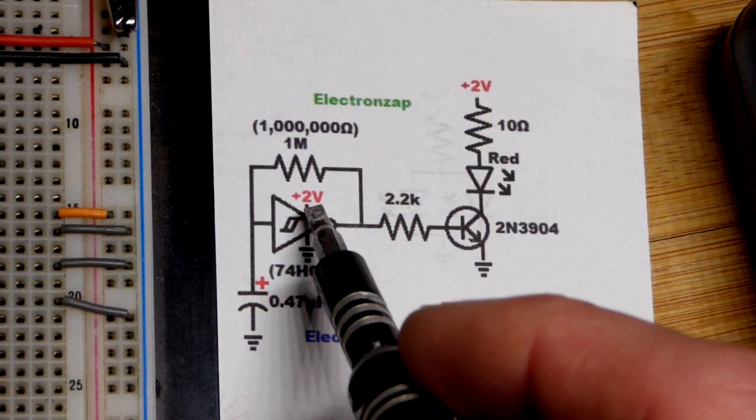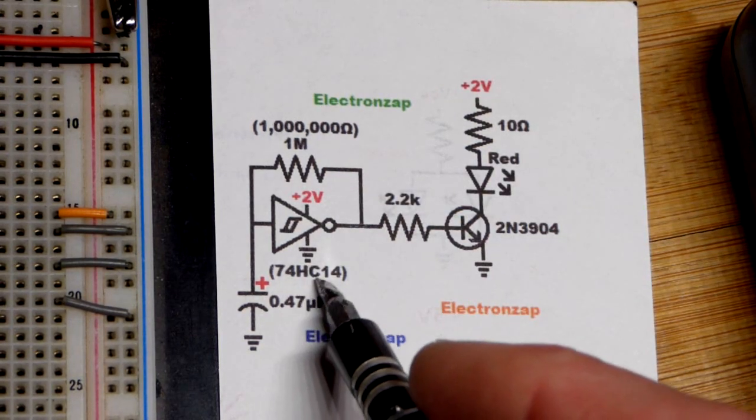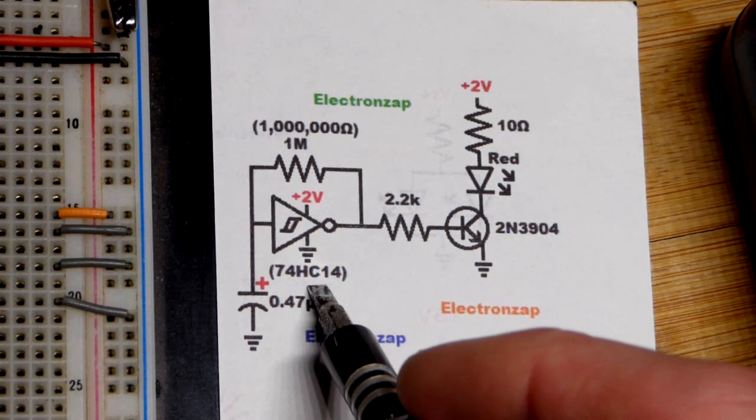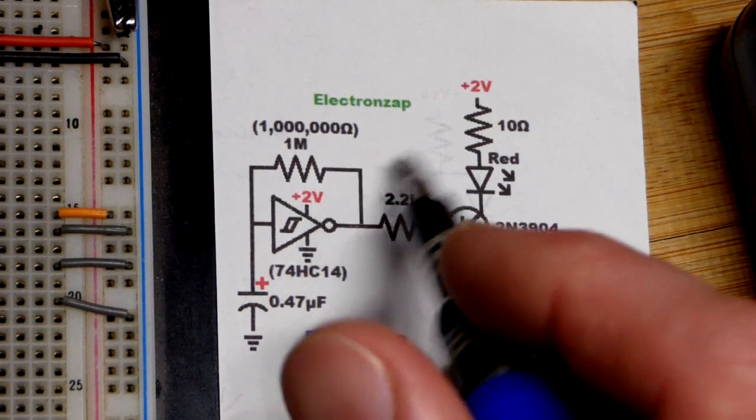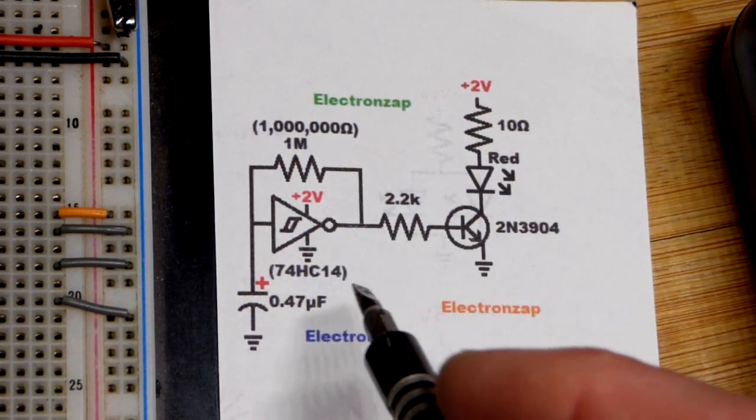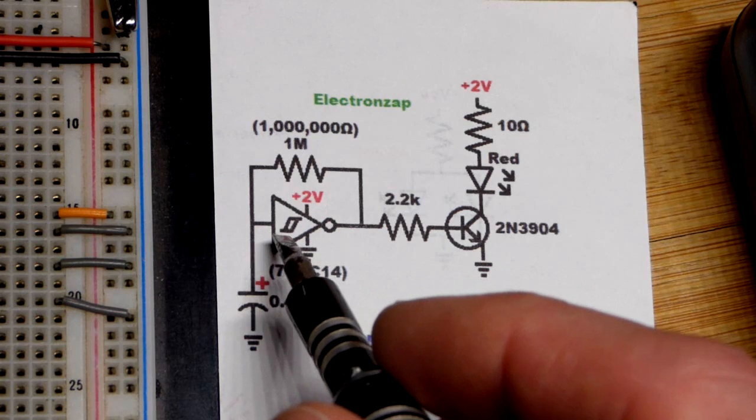The high speed CMOS version is the reason why we can use the voltage. This is the minimum voltage at 2 volts that I generally see with high speed CMOS integrated circuits. Other ones may have a different voltage, but I commonly see 2 volts as the minimum. I think 6 volts as the maximum.